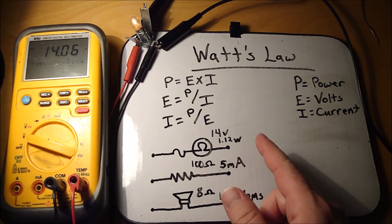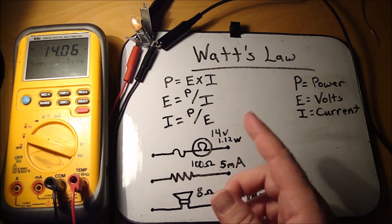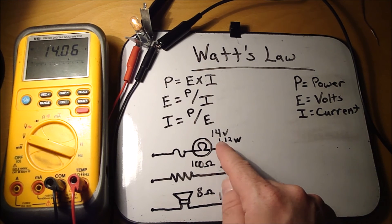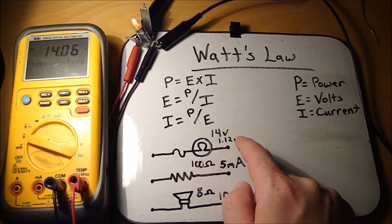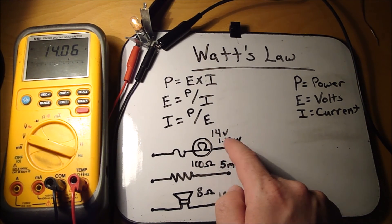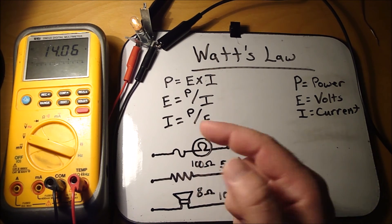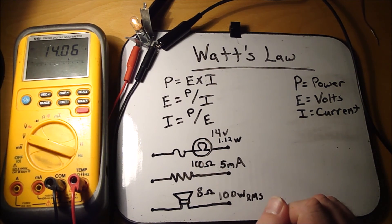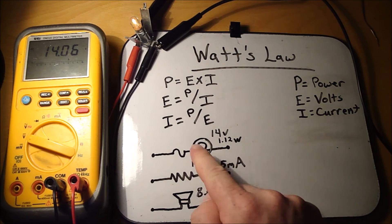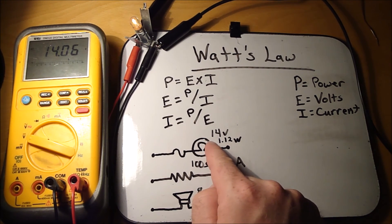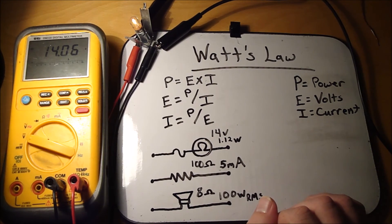So where you would use Watt's Law in a circuit. Let's say we got a 14-volt, 1.12-watt light bulb, which is this right here. And we want to know how much current draw this light bulb is going to have and what size fuse we need to put in line with it.